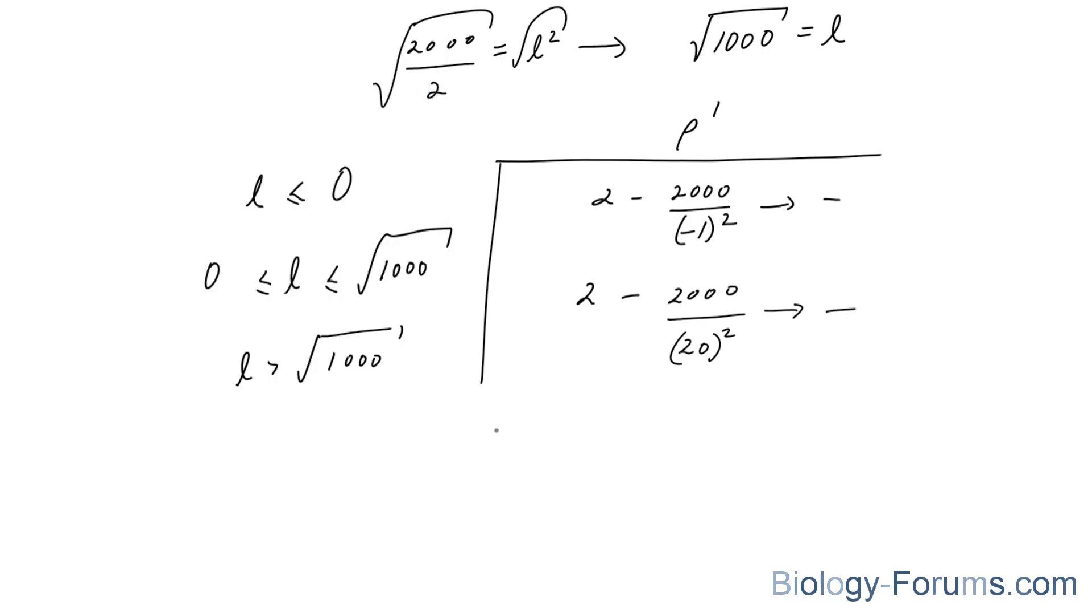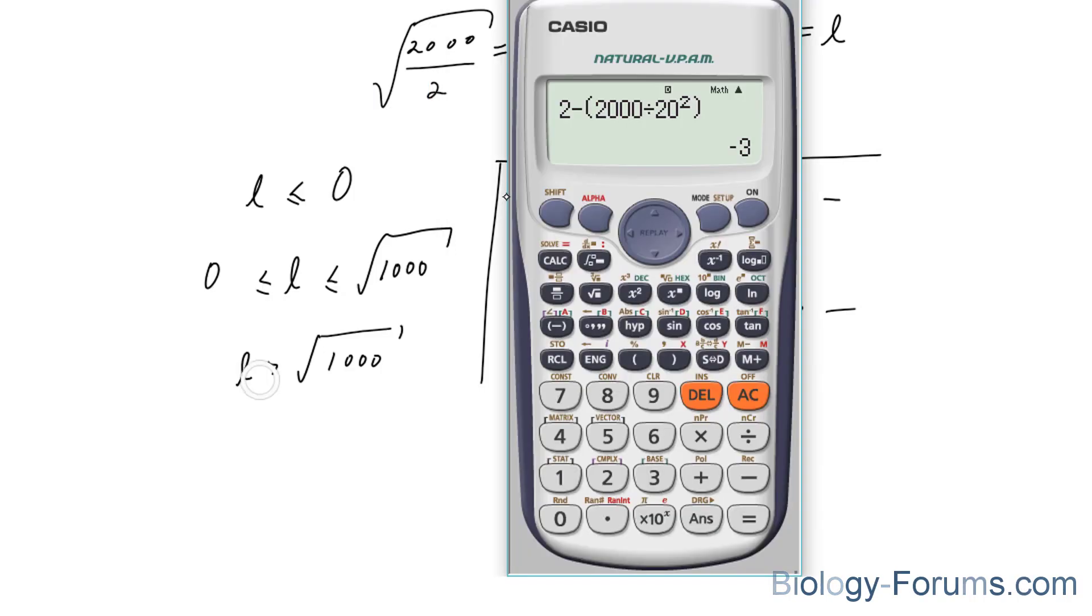And lastly, we need to pick a number that's greater than the square root of 1,000. 2 minus the square root divided by the square root, and let's choose 1,001. And we need to square this.